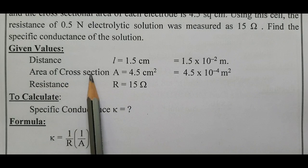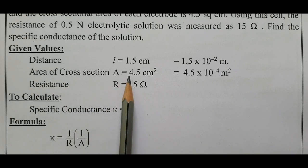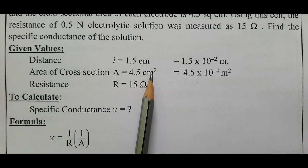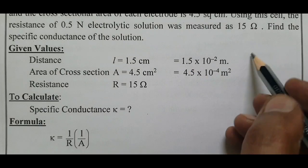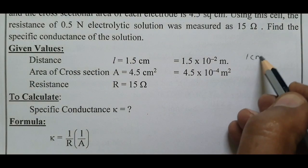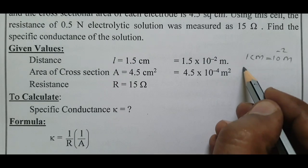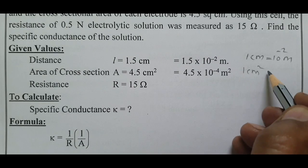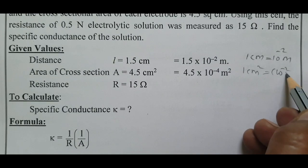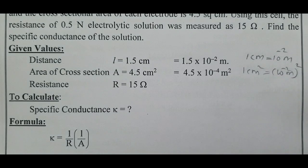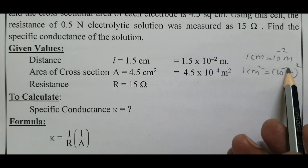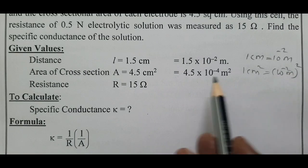Area of cross-section A is given as 4.5 centimeter square. In our problem, it is given as square centimeter, 4.5. 1 centimeter is equal to 10 power minus 2 meter. 1 centimeter square equals 10 power minus 2 meter square, that is equal to 10 power minus 4 meter square.